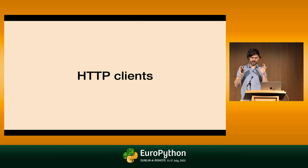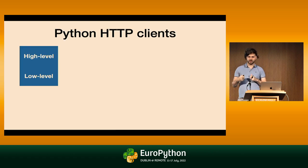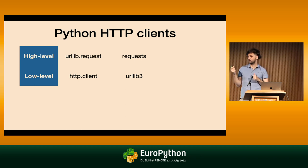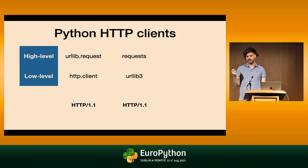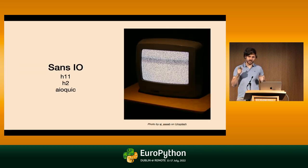I want a client that supports MASQUE, meaning I need support for proxies and for HTTP/3. What are my options in Python? Python has batteries included, so we have an HTTP library in the standard library. But the most popular option today is requests. Unfortunately, both these libraries support HTTP/1 only. For HTTP/2, I can use a library called HTTPX. But I'm not aware of any ready-to-use client that would support HTTP/3.